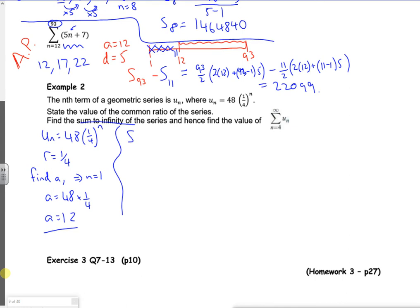So the sum to infinity, it's a over one minus r. So the sum to infinity is 12 over one minus a quarter, so it's 12 over three-quarters. The threes will cancel to leave me a value of 16.